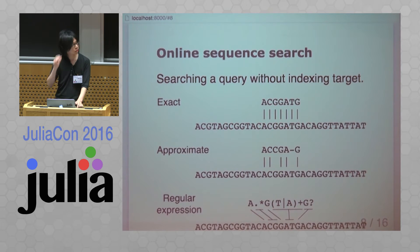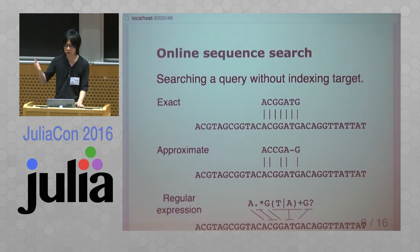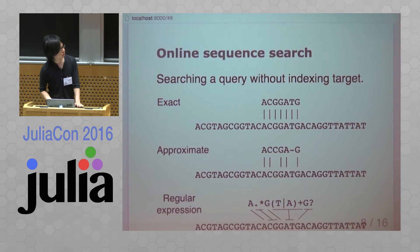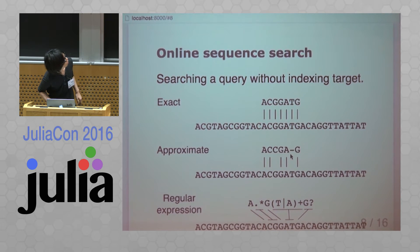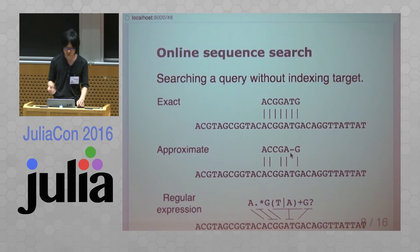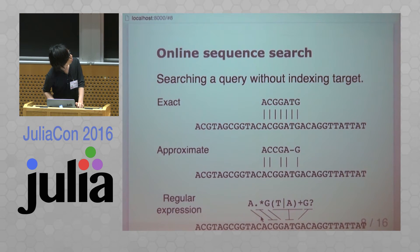Online sequence search involves searching a query by creating an index for the target sequence. It comes with three flavors: exact search, approximate search which allows several mismatches over regions and insertions after a specified number of errors, and regular expressions where you can describe a pattern.